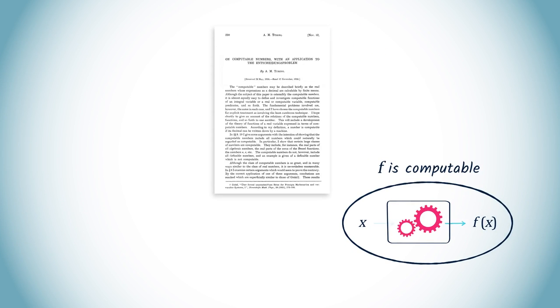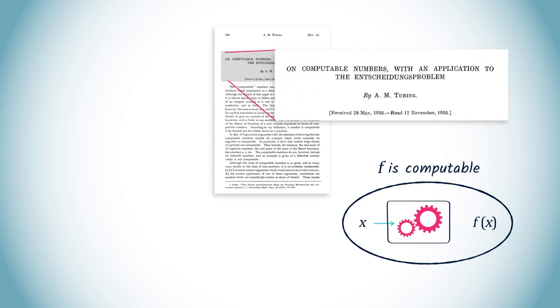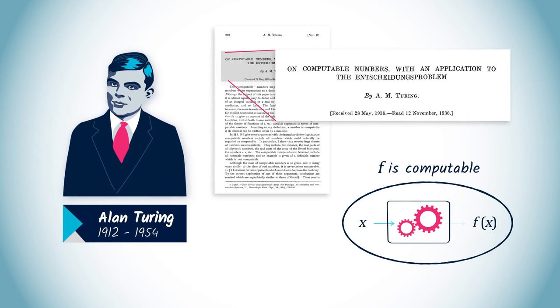Turing machines are an elegant theoretical tool designed in 1936 by the British mathematician Alan Turing as a solution to the problem of computability.